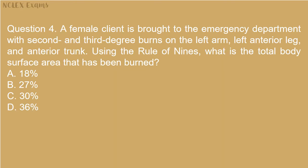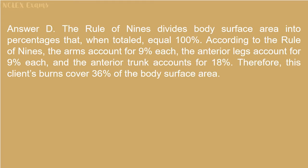Question 4: A female client is brought to the emergency department with second and third degree burns on the left arm, left anterior leg, and anterior trunk. Using the rule of nines, what is the total body surface area that has been burned? A) 18%. B) 27%. C) 30%. D) 36%. Answer D: The rule of nines divides body surface area into percentages totaling 100%. The arms account for 9% each, the anterior legs account for 9% each, and the anterior trunk accounts for 18%. Therefore, this client's burns cover 36% of the body surface area.